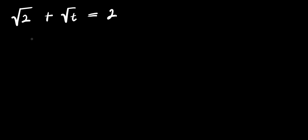Hello. How to solve this radical problem: we have square root of 2 plus square root of t equals 2. We are solving for the value of t that satisfies this equation.